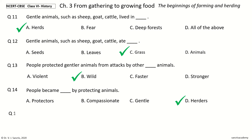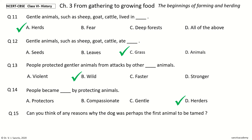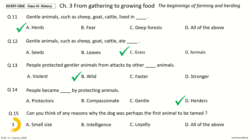Question 15, the last question. Can you think of any reasons why the dog was perhaps the first animal to be tamed? The options are: small size; intelligence; loyalty; all of the above. And the answer is all of the above.